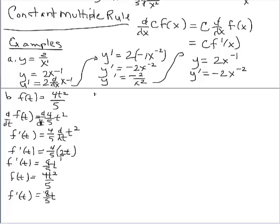At this point, I want to connect to a linear function. Let's look at y equals x, because this is an interesting situation. Think about what that graph looks like. We know the slope on that linear function is 1 — it has a constant rate of change — so we know the derivative y prime is going to be 1.